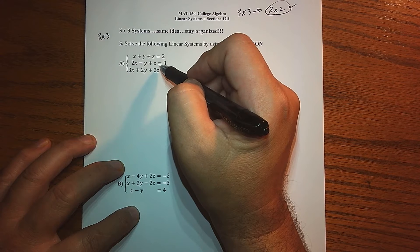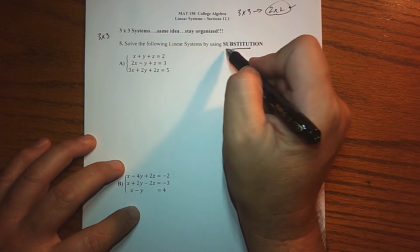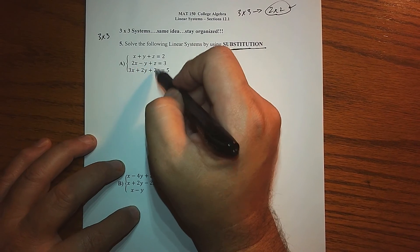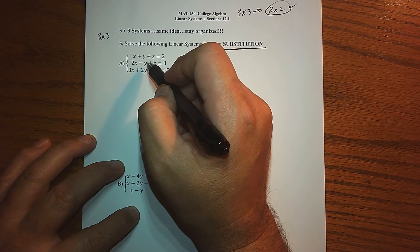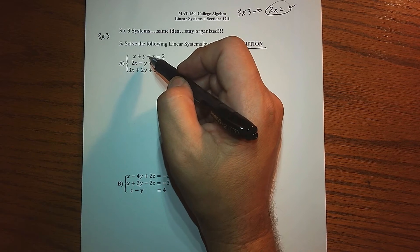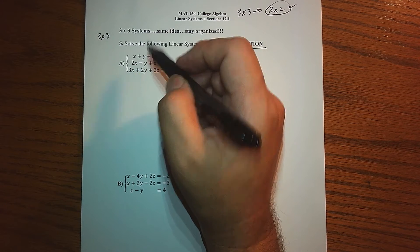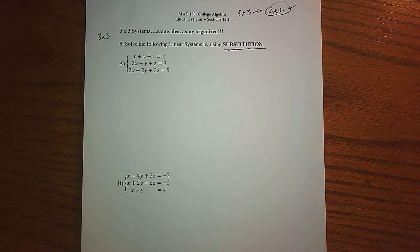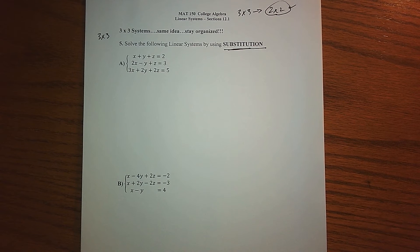I'm going to start with substitution. I have to basically decide which variable and which equation do I want to solve for. In this case I actually have nine choices. I can choose to solve for X in any one of the three, I can choose to solve for Y in one of the three, or I can choose to solve for Z in any one of the three. So it doesn't really matter, just make one and move forward.